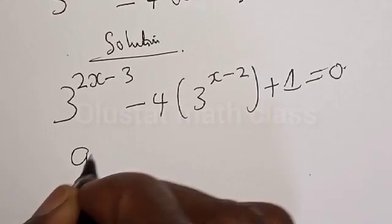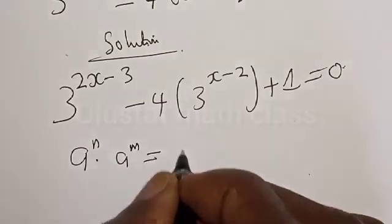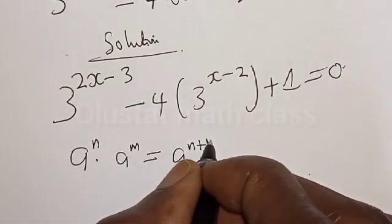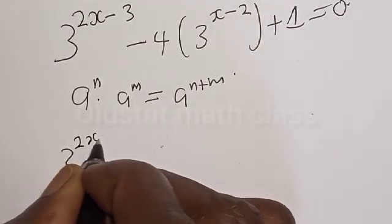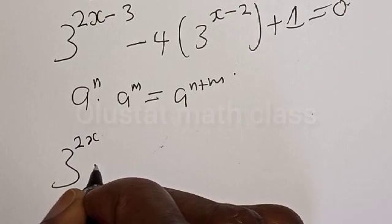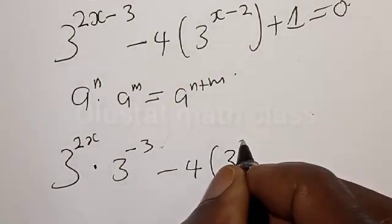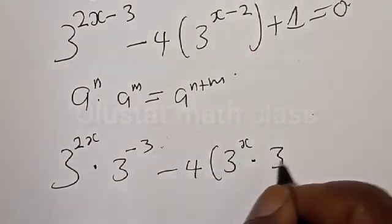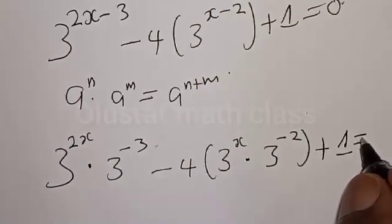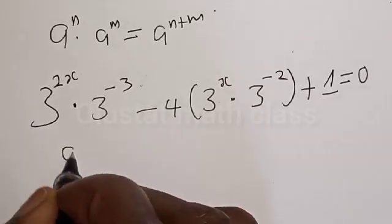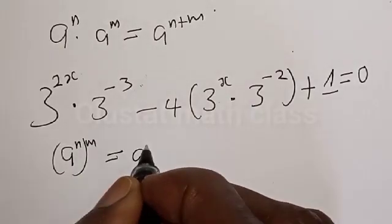Remember, if you have a raised to power n multiplied by a raised to power m, that is the same as a raised to power (n plus m). Then this implies that we have 3 raised to power 2x multiplied by 3 raised to power minus 3, minus 4 times 3 raised to power x multiplied by 3 raised to power minus 2, plus 1 is equal to 0.